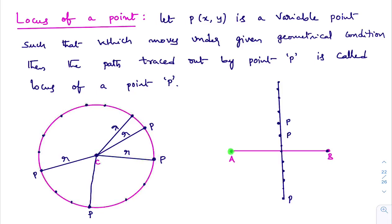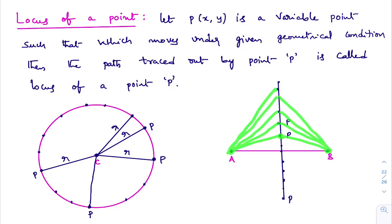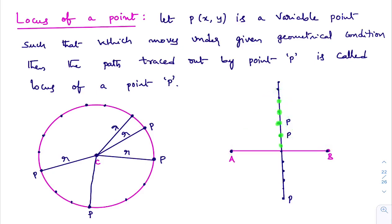In this example, A and B are two fixed points. P is a point which moves such that it is equidistant from A and B. If you trace out all those points, the path formed by point P based on the given condition is a straight line. So locus of a point can be a curve — it may be a circle, parabola, ellipse, or it may be a straight line.